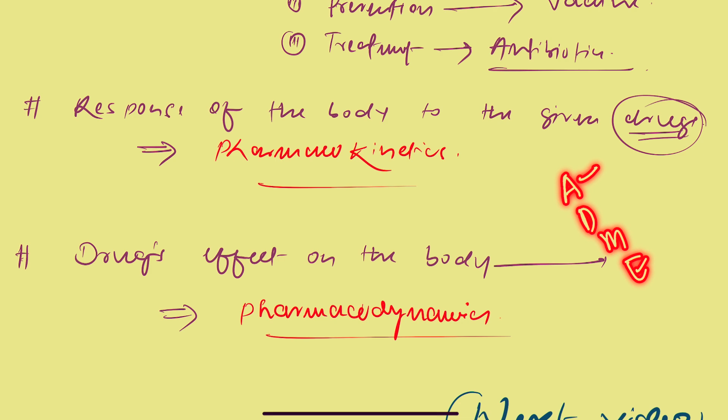So what are the somethings? That can be remembered as ADME. A for absorption, D for distribution, M for metabolism, and E for excretion of the drugs.